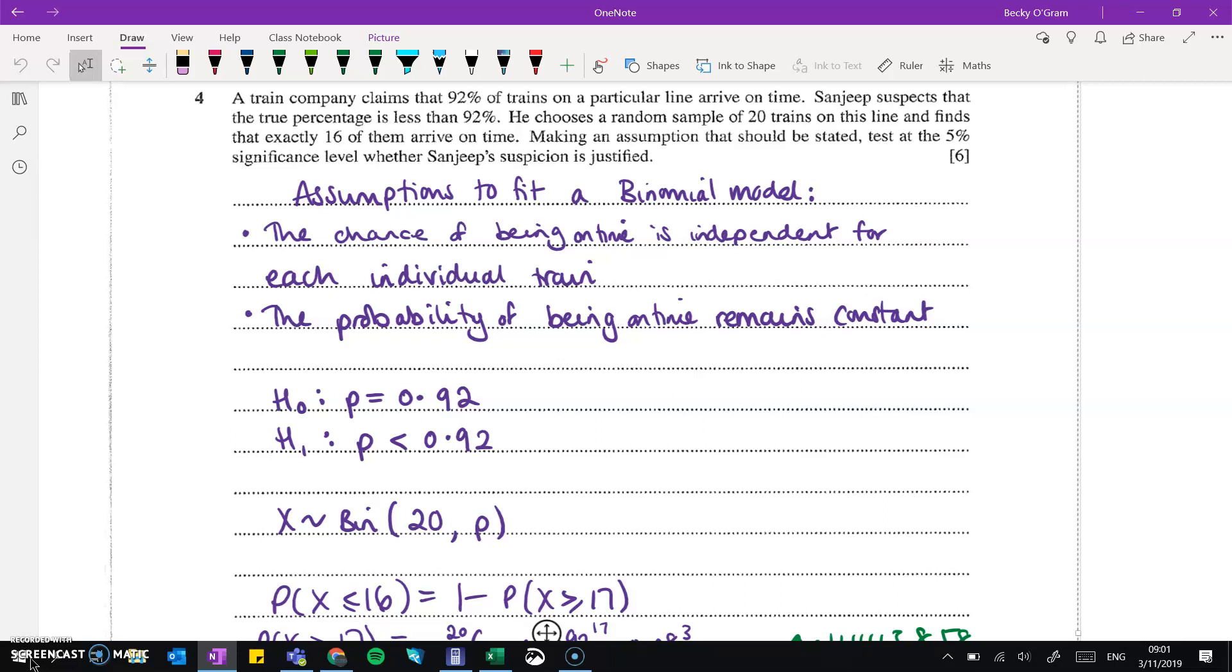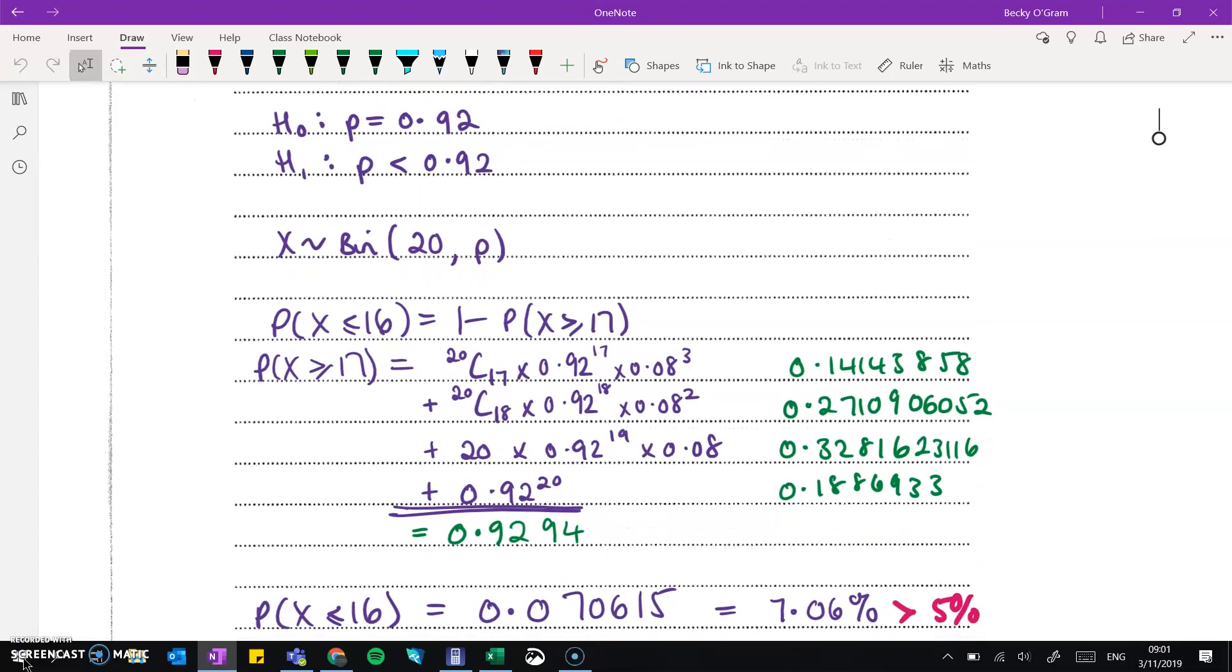Then we set up our hypothesis test with our null hypothesis being that the chance was 0.92. And the alternative is that it's less than that. And here's our binomial distribution set up. We are working out the probability that x is less than or equal to 16. So we've got these 16 trains that we found when it was tested. Now if we got less than 16 trains, we would be even more inclined to think that the claim wasn't true. So we test out 16 or less.